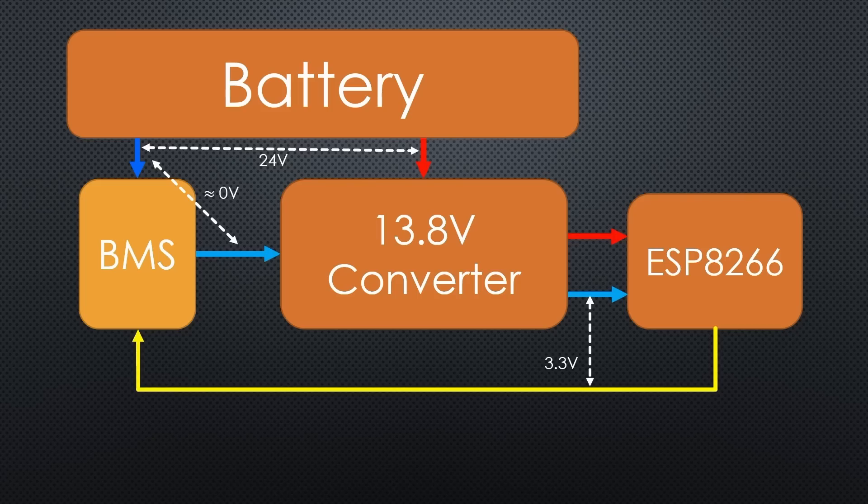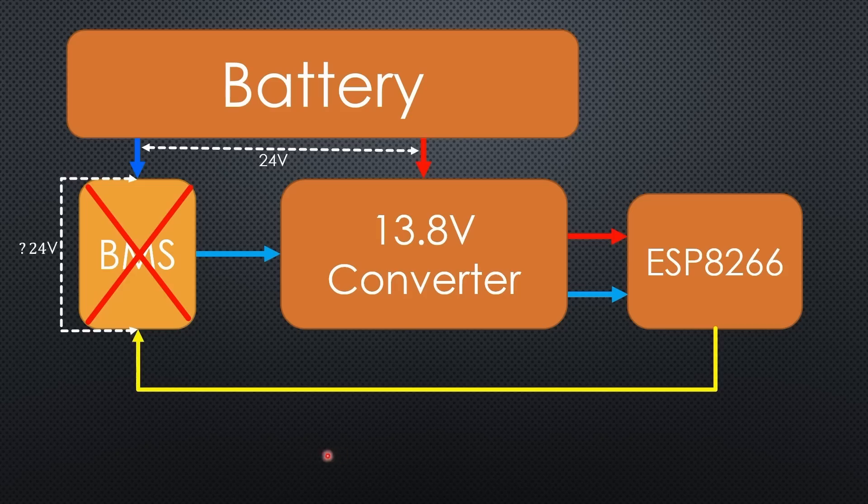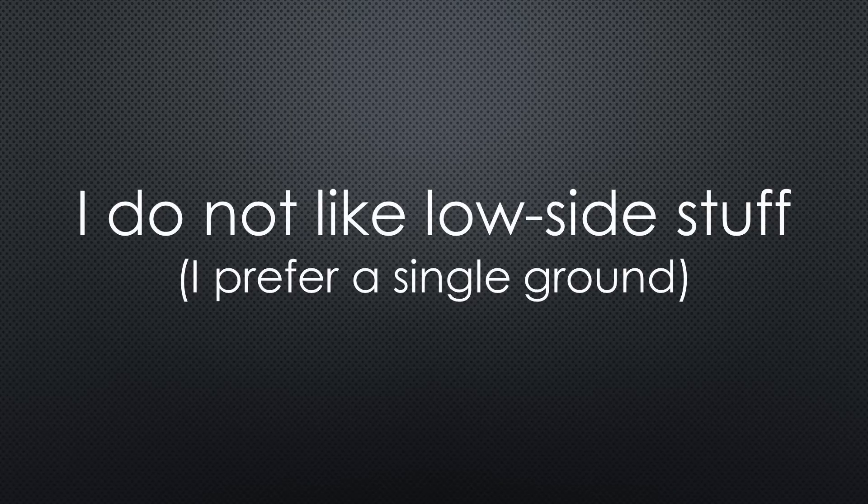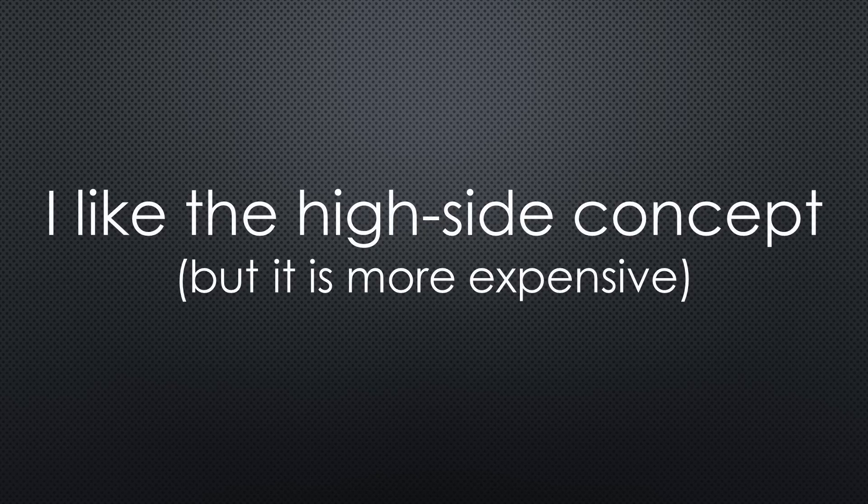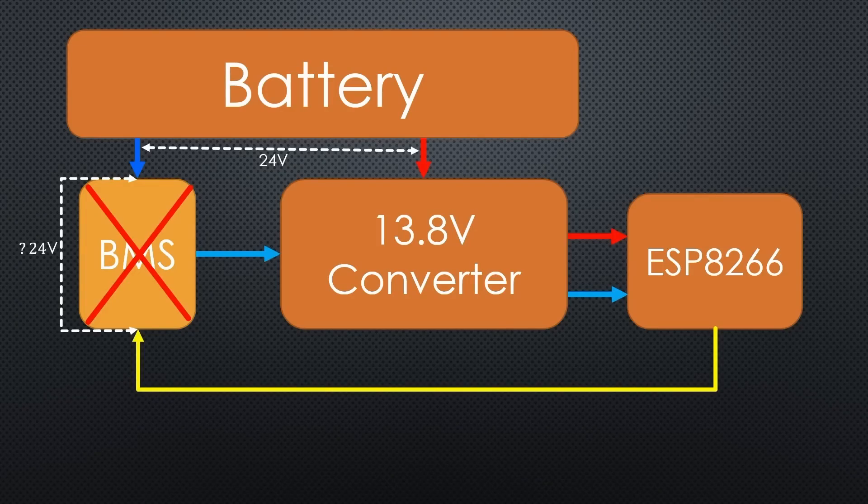But what happens if the BMS switches off? This resistance becomes high, and because the resistance inside the converter is lower, the light blue line is pulled towards the 24V. So the data line voltage inside the BMS is undoubtedly higher than 3.3V. So I assume this killed the BMS. And this is why I do not like these low side acrobatics. I love a stable ground reference. Therefore, I am a big fan of high side switches and current meters. But I know, these are more expensive. If I power the ESP8266 independently, it gets the same ground as the BLE tunnel. And the problem is solved.